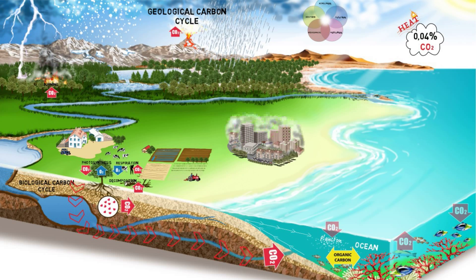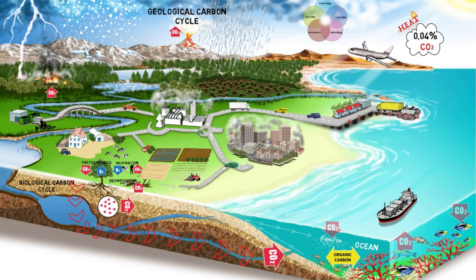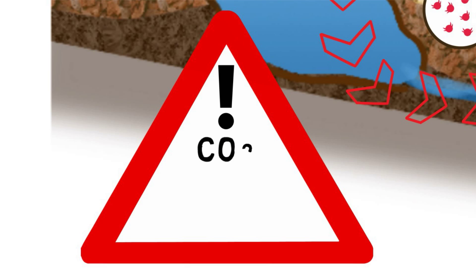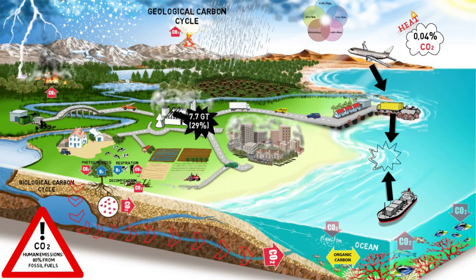In addition to the natural flows of carbon, anthropogenic activities are also releasing carbon dioxide into the atmosphere, causing levels to rise faster than ever recorded. The burning of fossil fuels is responsible for approximately 80% of total carbon dioxide emissions. Industrial combustion processes and commercial electricity use account for 7.7 billion tons of emissions per year. Transportation contributes an additional 6.6 billion tons.